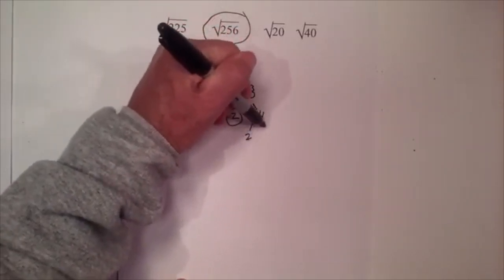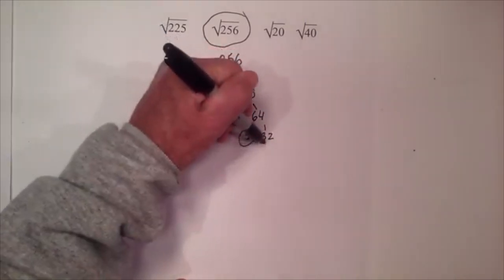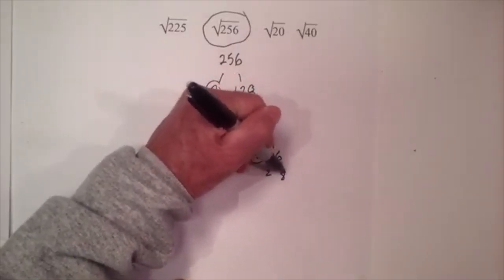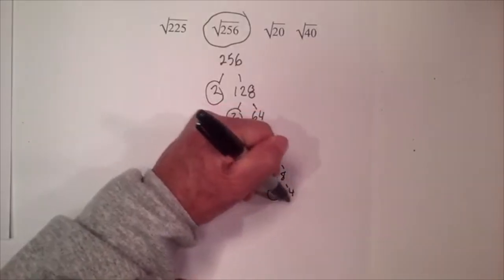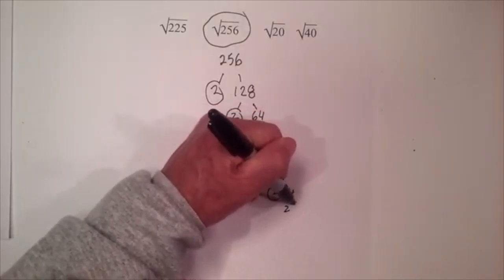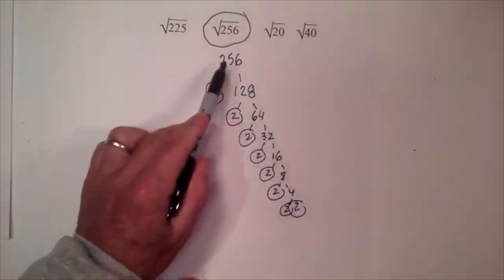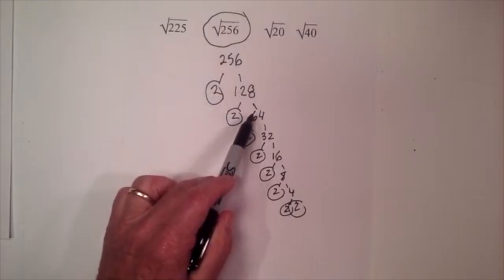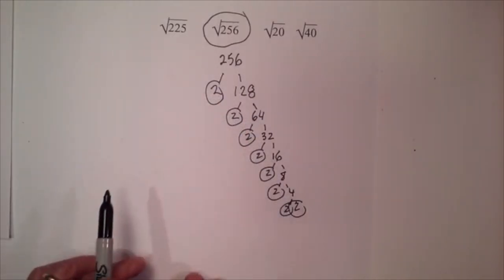I'm circling the 2, then 2 goes into 64 32 times, and then 2 goes into 32 16 times, then 2 times 8 is 16, 2 times 4, a lot of 2's here, and then 2 times 2 is 4. So here's what I did: 256, 2 goes into 256 128, then 2 times 64, all the way down until I'm down to 2 prime numbers.